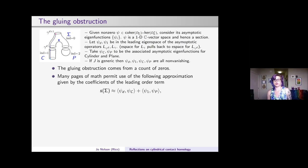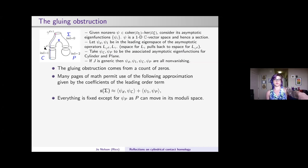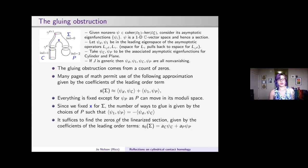The bulk of the work in the Hutchings-Taubes 2 paper is making this approximation to the section rigorous. Everything is fixed except ψ_p (the asymptotic eigenfunction for the plane p), since p can move in its moduli space. The number of gluings equals the number of choices of p such that the gluing obstruction vanishes, which reduces to finding zeros of the linearized section expressed in terms of leading-order coefficients a_c (fixed) and a_p (variable).